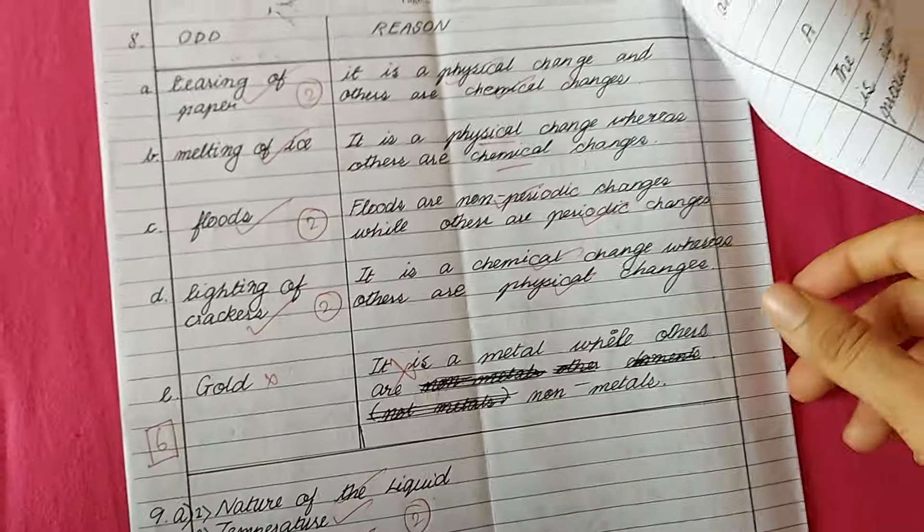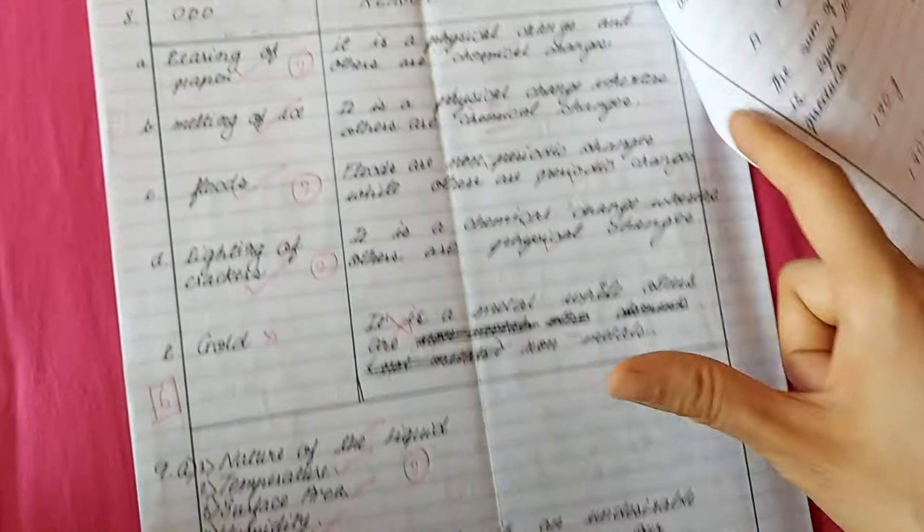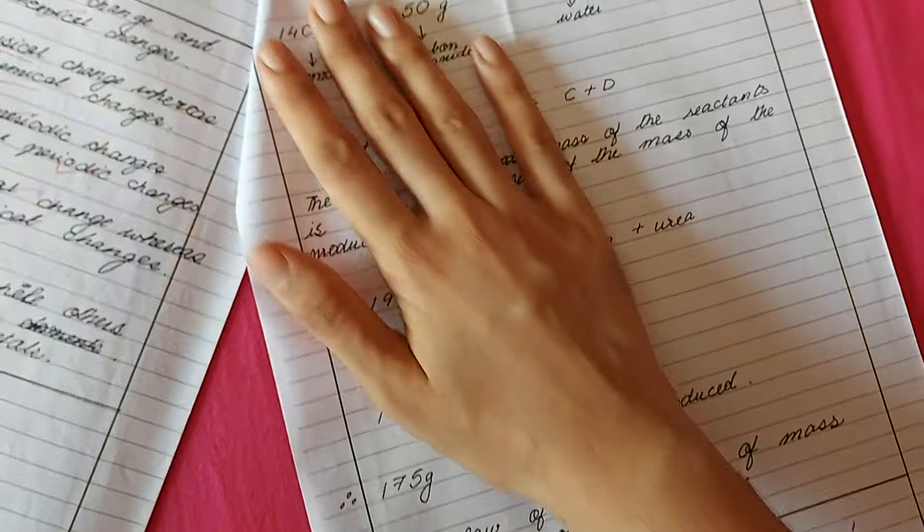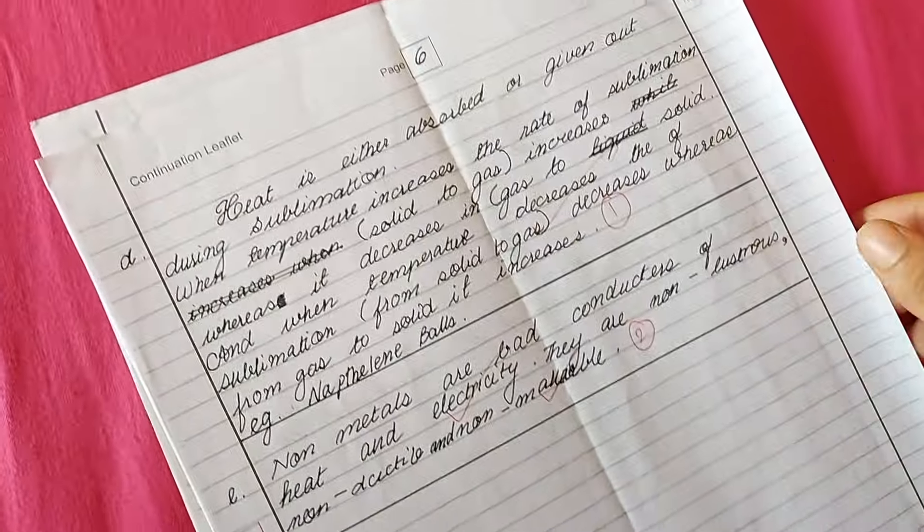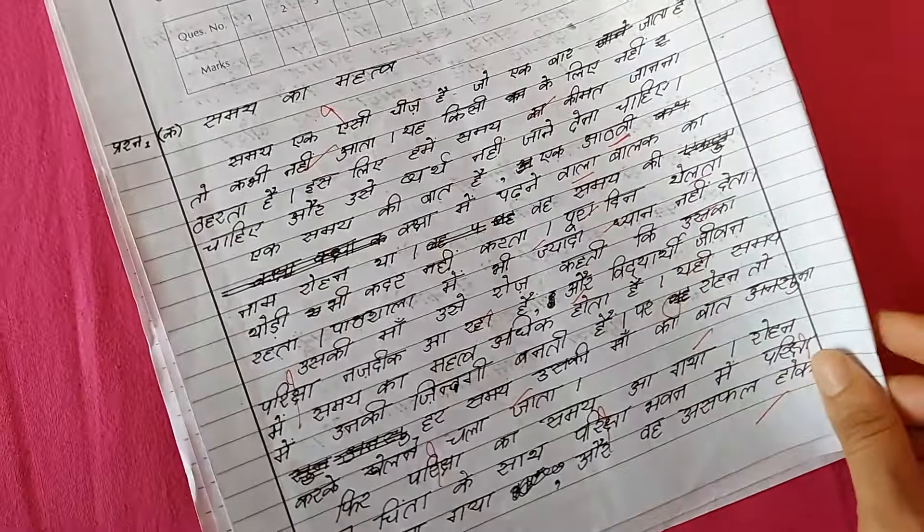For odd one and reasoning, again I would tell you make a table. Make as many tables and charts as you can because it will help you gain marks. Making diagrams is very important, even in subjects like physical education. If you can make diagrams, just make them.